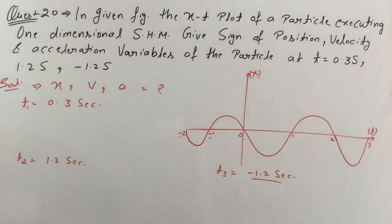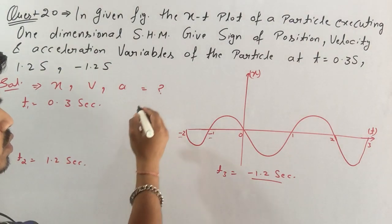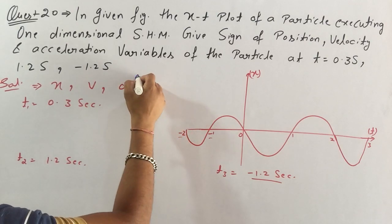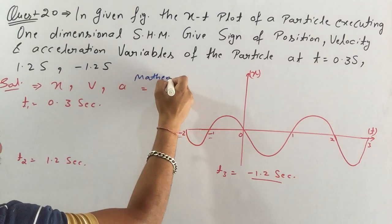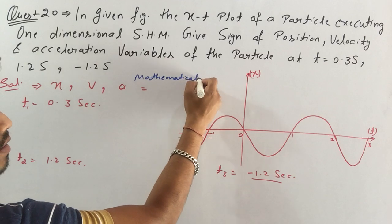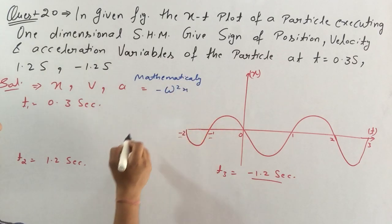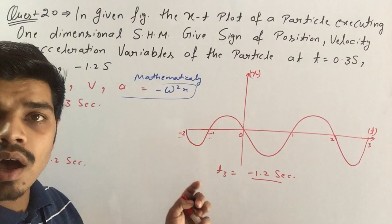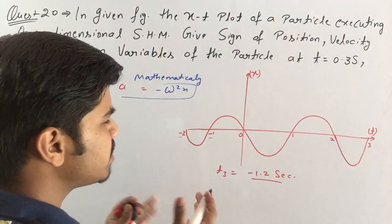Now students first of all you have to know that acceleration under simple harmonic motion, mathematically the acceleration is given by minus omega square x. This is the double derivative equation of simple harmonic motion.